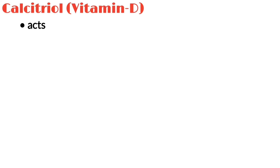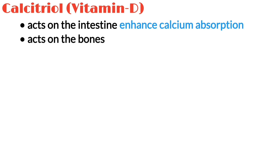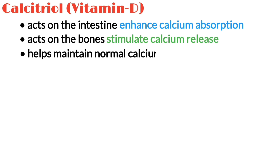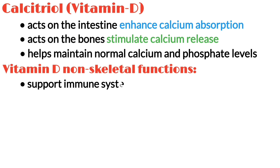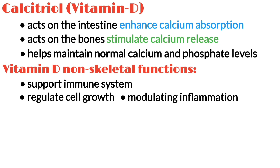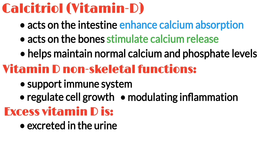Calcitriol acts on the intestines to enhance calcium absorption and on the bones to stimulate calcium release when needed. It also helps maintain calcium and phosphate levels in the blood within a narrow range. Vitamin D also has non-skeletal functions such as supporting the immune system, regulating cell growth, and modulating inflammation. Excess vitamin D is typically excreted in the urine.